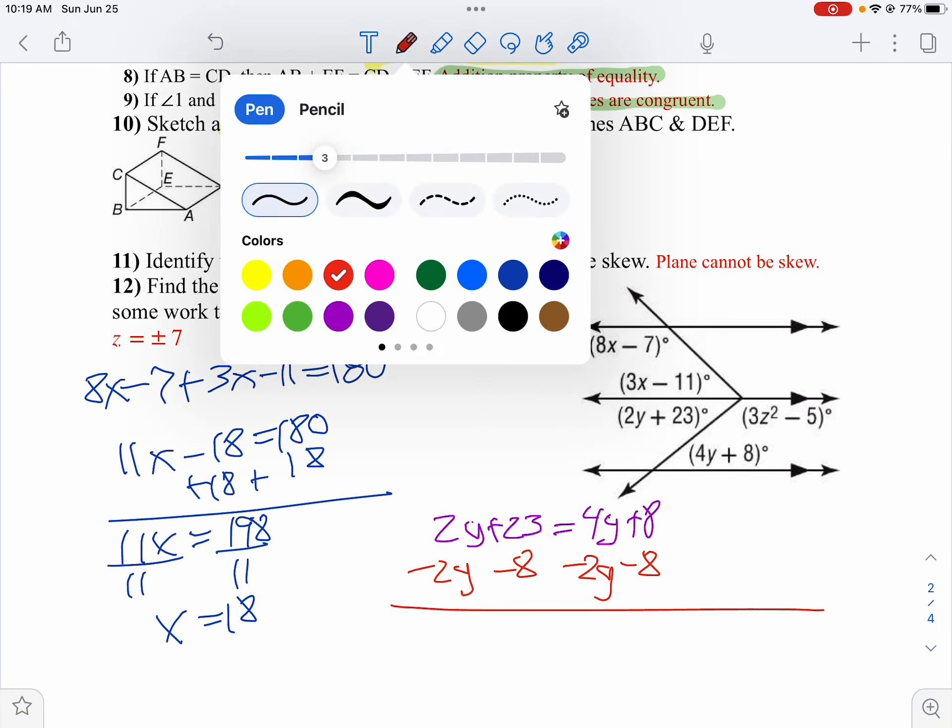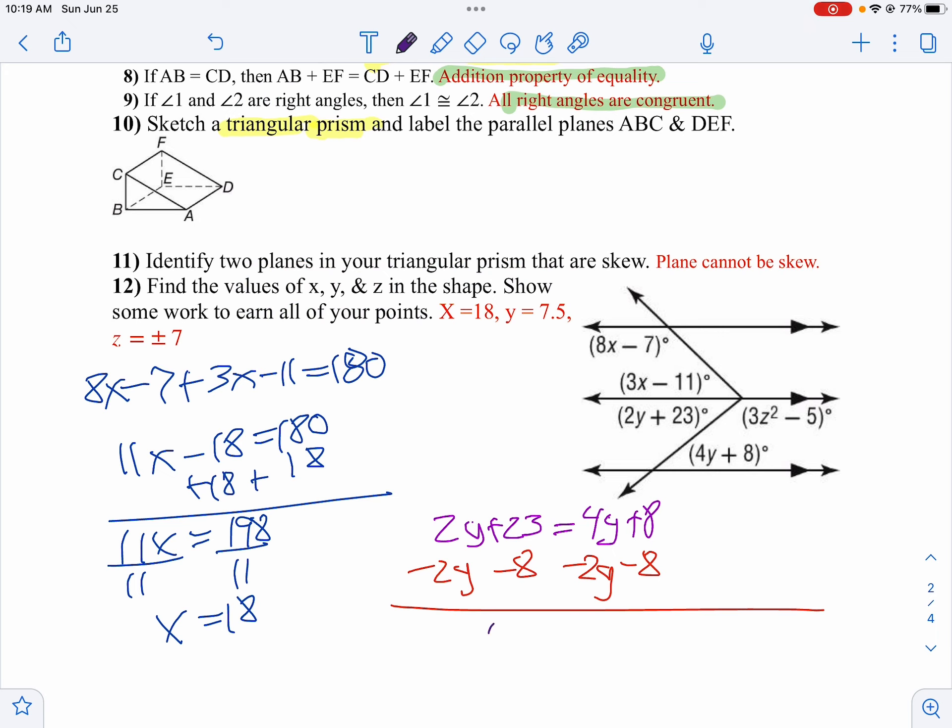So 23 minus 8 is 15 equals 2y. I'll divide both sides by 2. y would be 7.5.